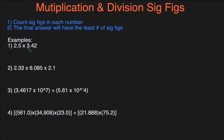For the first example, we're just going to plug this into the calculator and get the answer before worrying about sig figs. When you plug that in, you'll get the product as 8.55. Then we count the number of sig figs in each of these numbers. This first number will have two sig figs, because the two and the five both count, and then this next number will have three sig figs.